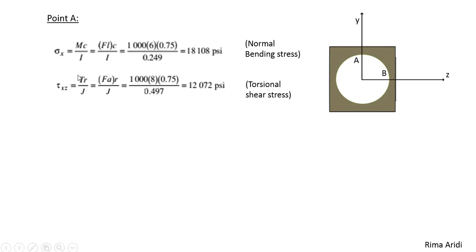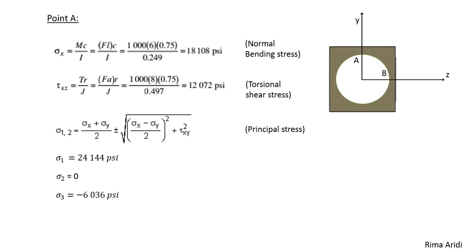On point A, we have the torsional shear stress. Its formula is T torque times R over J, which is polar moment, which is pi over 2 times R power 4. We just have to apply the values or to substitute the values in these equations in order to find the stresses.